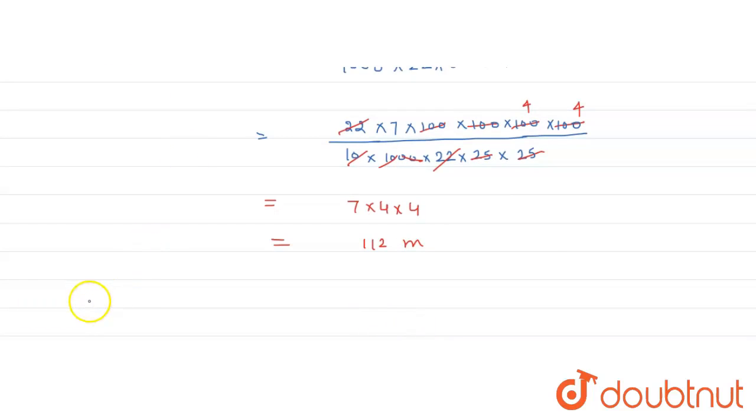So height of, or the length of the wire is 112 meter. So this is the final answer. Thank you.